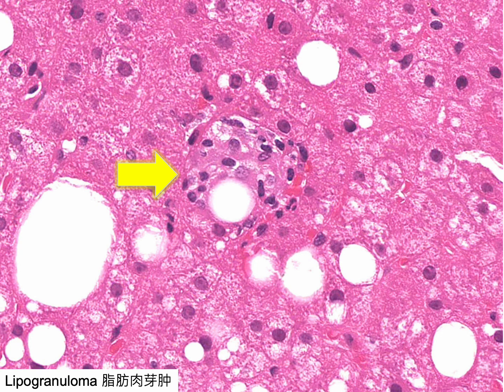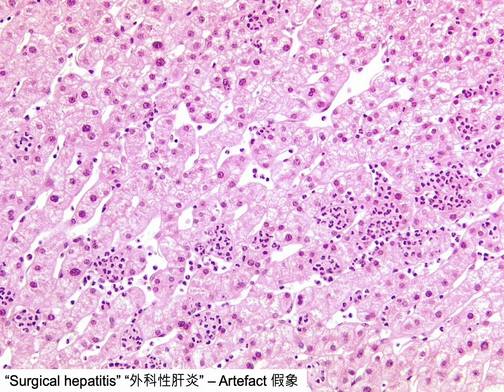A lipogranuloma is characterized by a loose gathering of lymphocytes and macrophages encircling a central fat globule, present in fatty liver diseases as well as with ingestion of mineral oil through food or medication. Groups of neutrophils dispersed within the sinusoids, devoid of any associated hepatocytic damage or necrosis, represent so-called surgical hepatitis — a nonspecific observation frequently encountered in samples obtained during surgical interventions. Surgical hepatitis lacks the characteristics of genuine hepatitis and holds no clinical relevance; it should be distinguished from other conditions featuring sinusoidal neutrophilic infiltration, such as alcoholic hepatitis, cytomegalovirus infection, and sepsis.